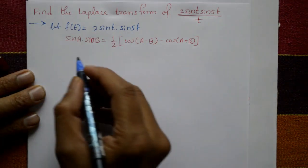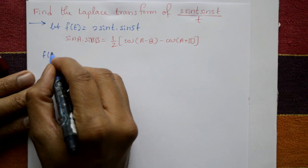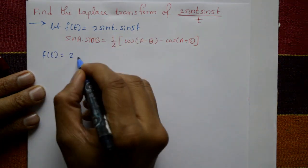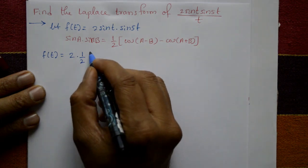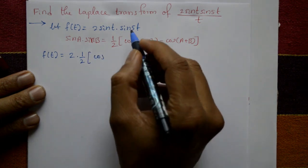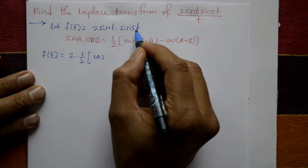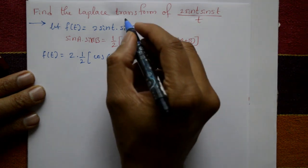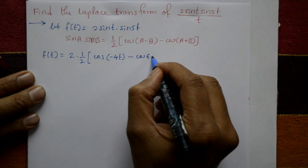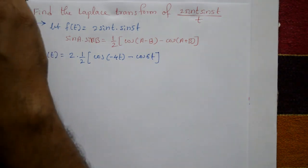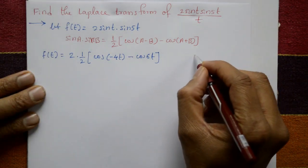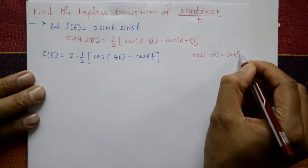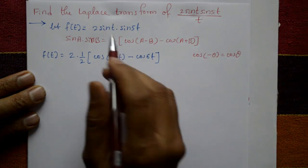Here a equals 1 and b equals 5. So f(t) equals 2 times one-half times cos(t minus 5t) minus cos(t plus 5t), which gives cos(minus 4t) minus cos(6t). Using cos(minus theta) equals cos(theta), this becomes cos(4t) minus cos(6t).